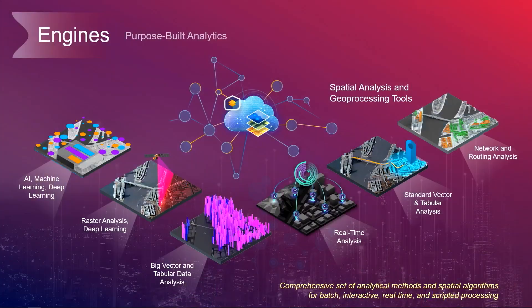Once your data is prepared and ready for analysis, Pro, Enterprise, and Online have purpose-built analytic engines. For example, we have raster analysis engines to run your deep learning models for object detection and classification. Similarly, Spark-based analysis of big vector and tabular data — both are examples of distributed processing necessary for fast computations on massive datasets. You can then customize them by deploying your own models or custom geoprocessing functions within these engines.